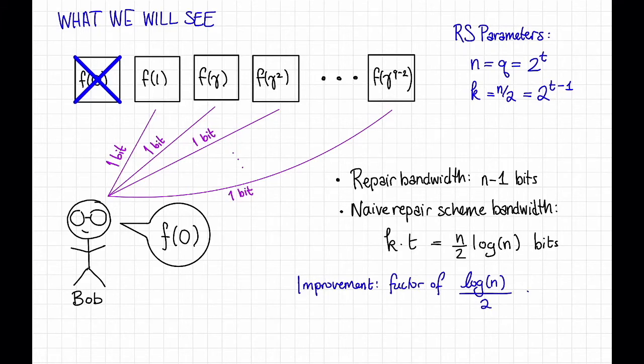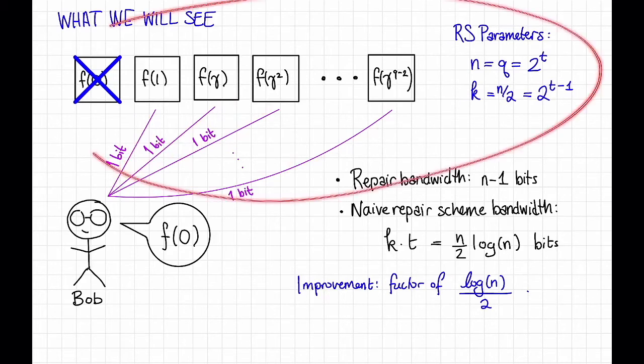This basic scheme that we'll see is pretty flexible. Actually, it gives rise to a whole family of schemes. It can work for k's other than n over 2, and it can work for different amounts of download other than a single bit. But let's focus on just this setup here for simplicity so that you can get the basic idea. Okay, so how are we going to achieve this?